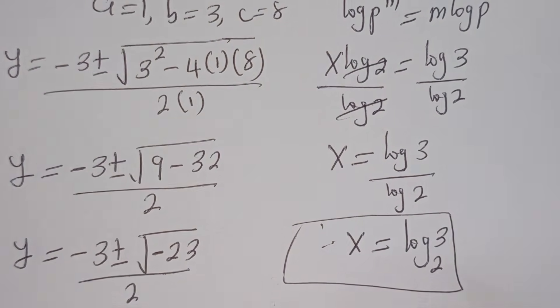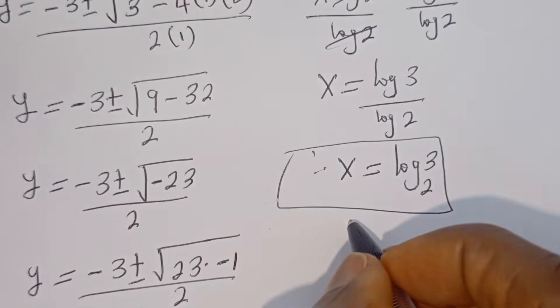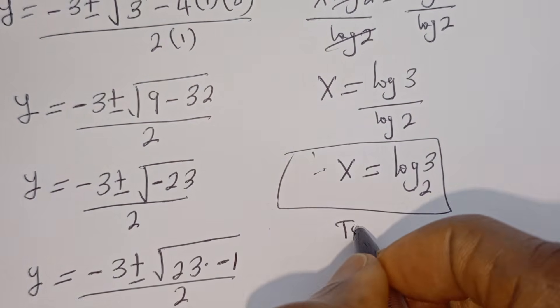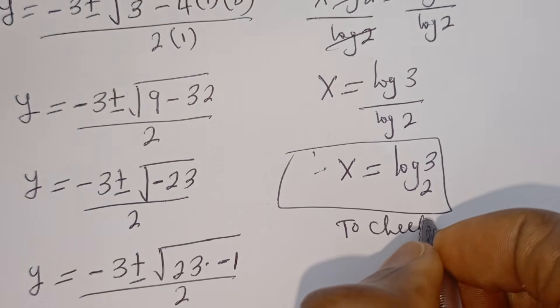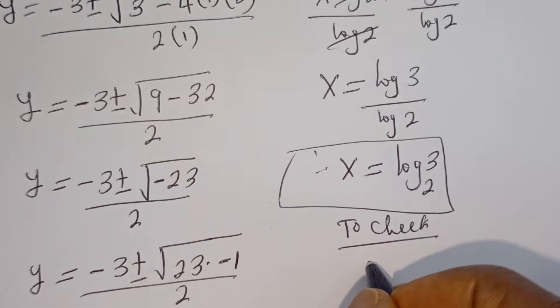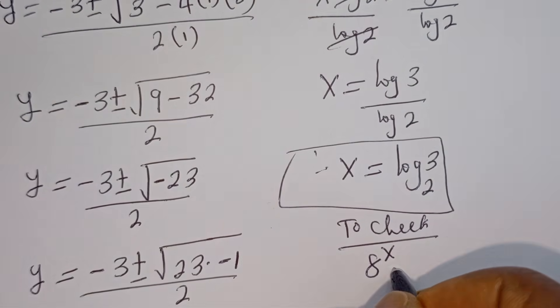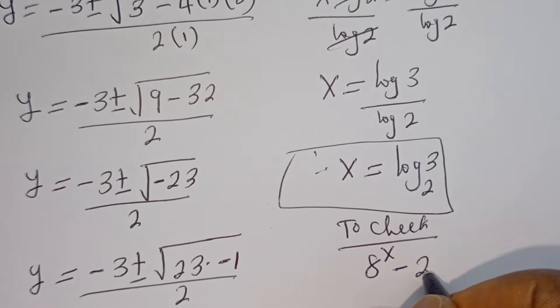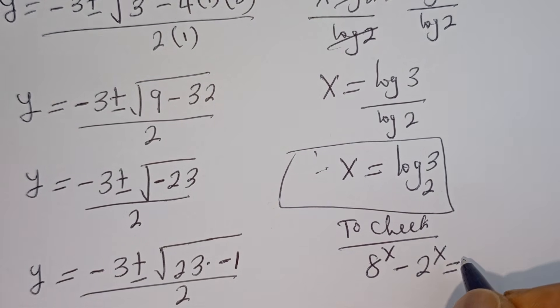We can check to confirm if this answer is right or wrong. Let's check. We have the given equation 8 to the power of x minus 2 to the power of x is equal to 24.